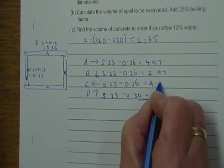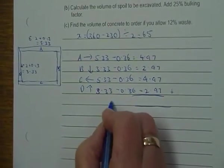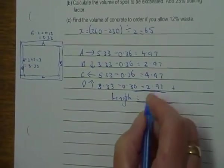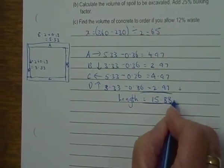C is 4.97, and D is 2.97, and I just add all of those up to get my length of the footing, and that's going to give me 15.88 metres.